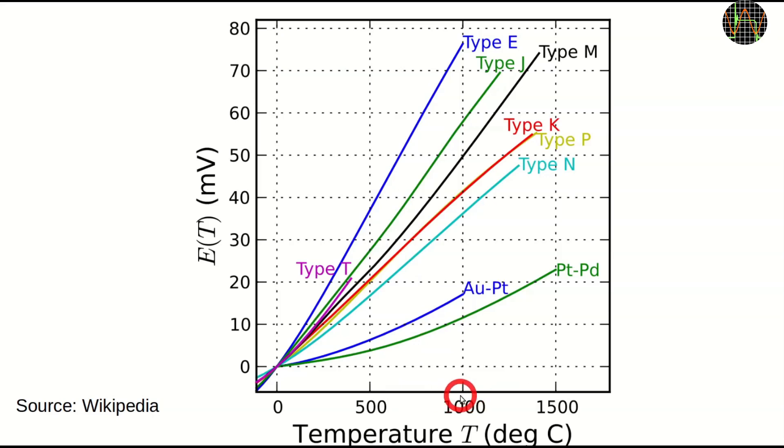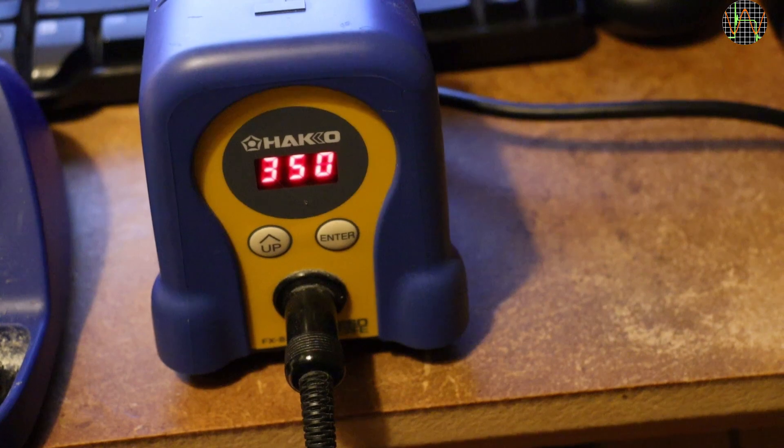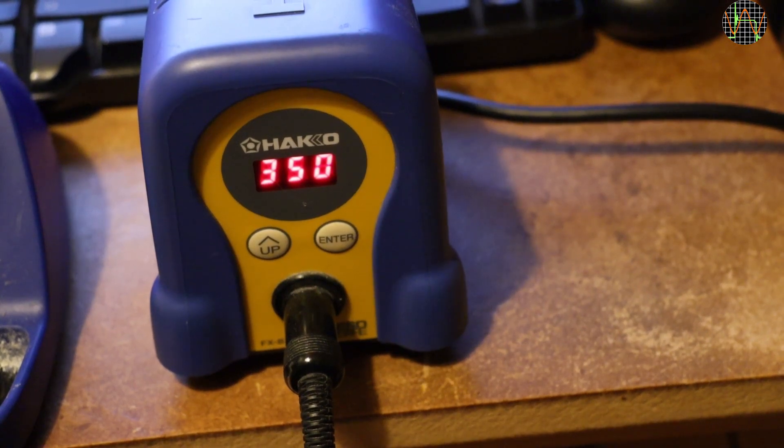In this case, neither type has a problem with the 500 degrees Celsius or 932 degrees Fahrenheit maximum used in this application. To test it, I use my trusty Hakko soldering station at 350 degrees Celsius or 662 degrees Fahrenheit, which I normally use for everyday soldering.